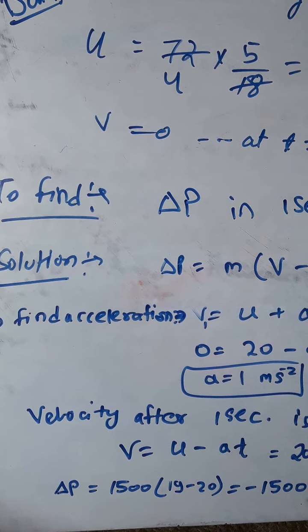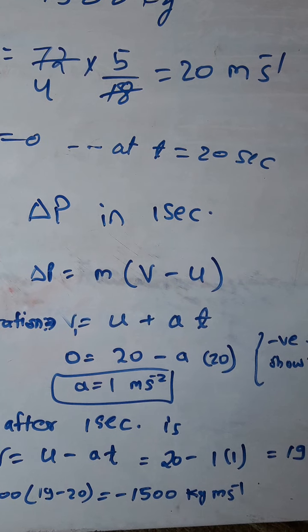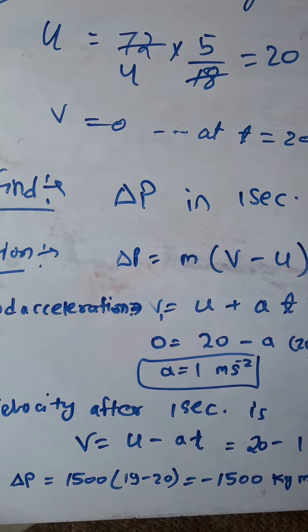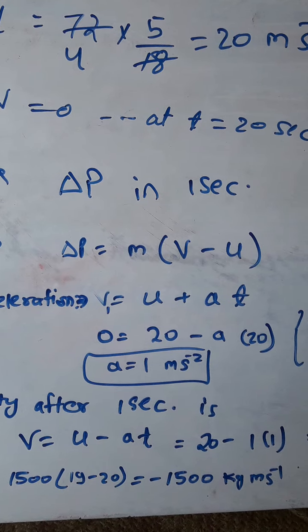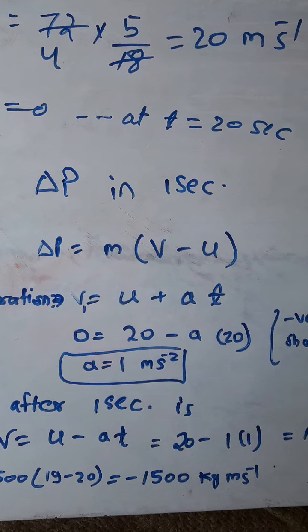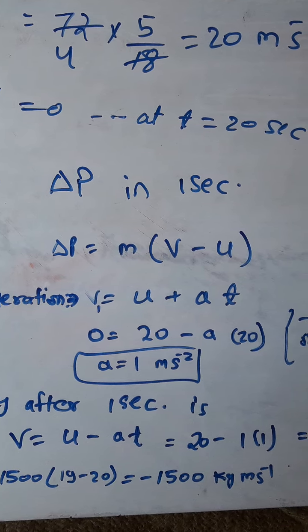The formula for change in momentum is mass times (final velocity minus initial velocity). To find the velocity at 1 second using v = u + at, I need to know the acceleration. But I don't know the acceleration, so first I'll use the overall case where final velocity is 0 at the end of 20 seconds.